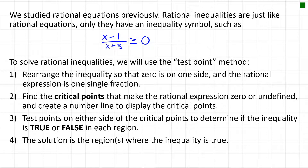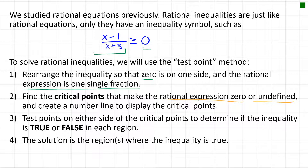We want to rearrange the inequality so that zero is on one side and we have a rational expression on the other, written as a single fraction. Then we find the critical points that make the rational expression zero or undefined.